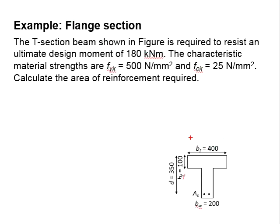The section has a flange equal to 400 mm. The thickness of the flange is 100 mm. The depth of the beam is 350 and the width of the web is 200.